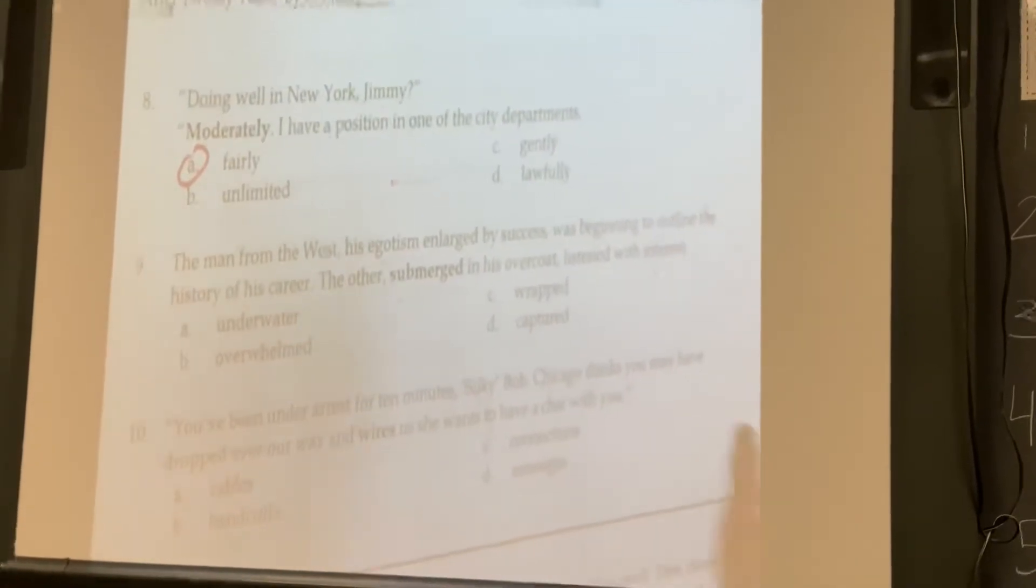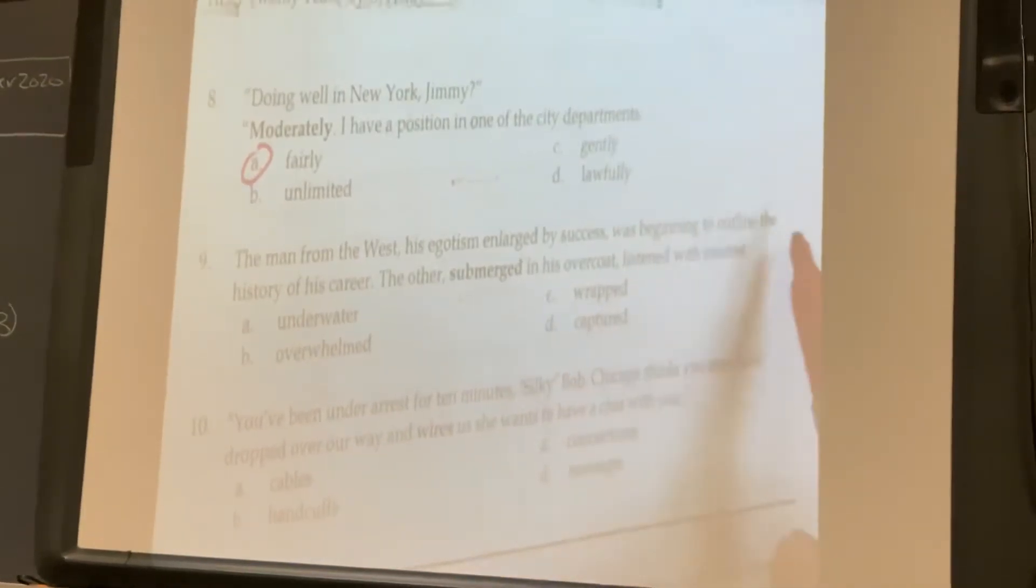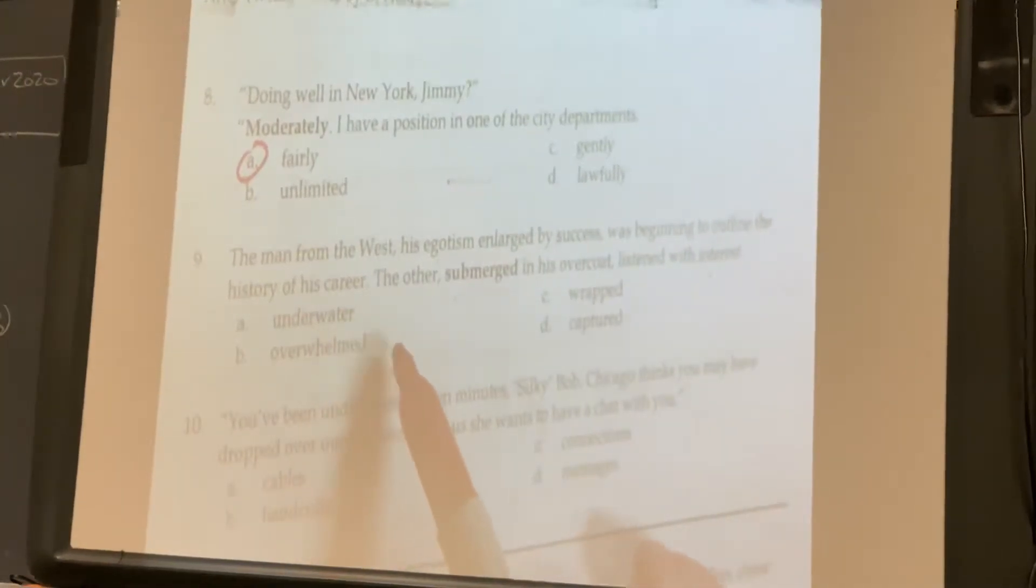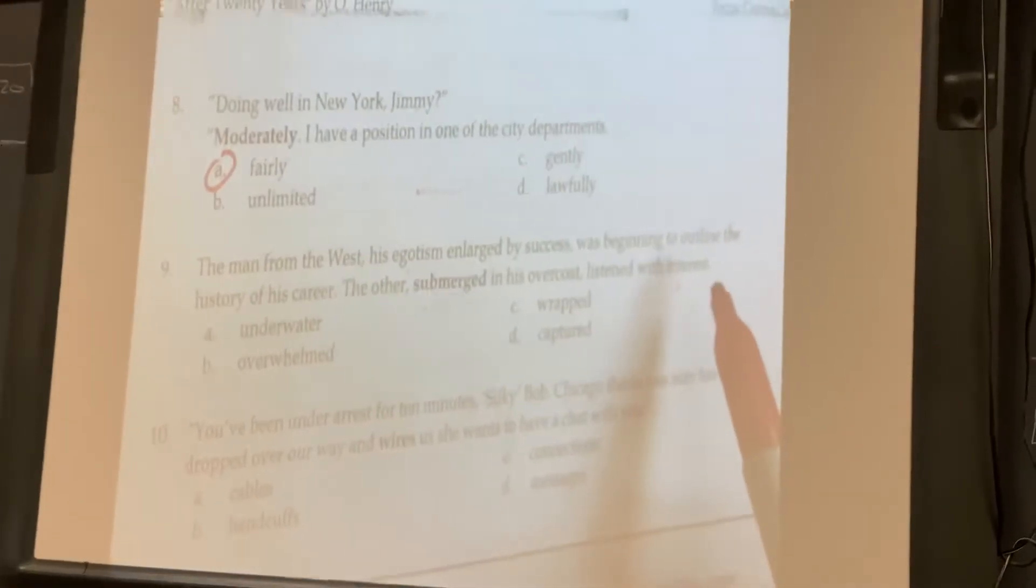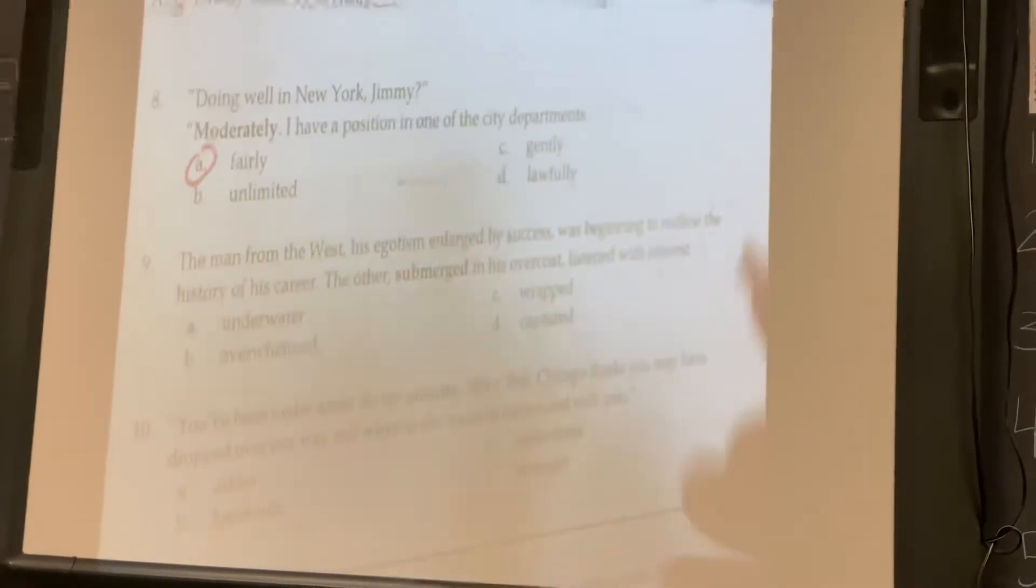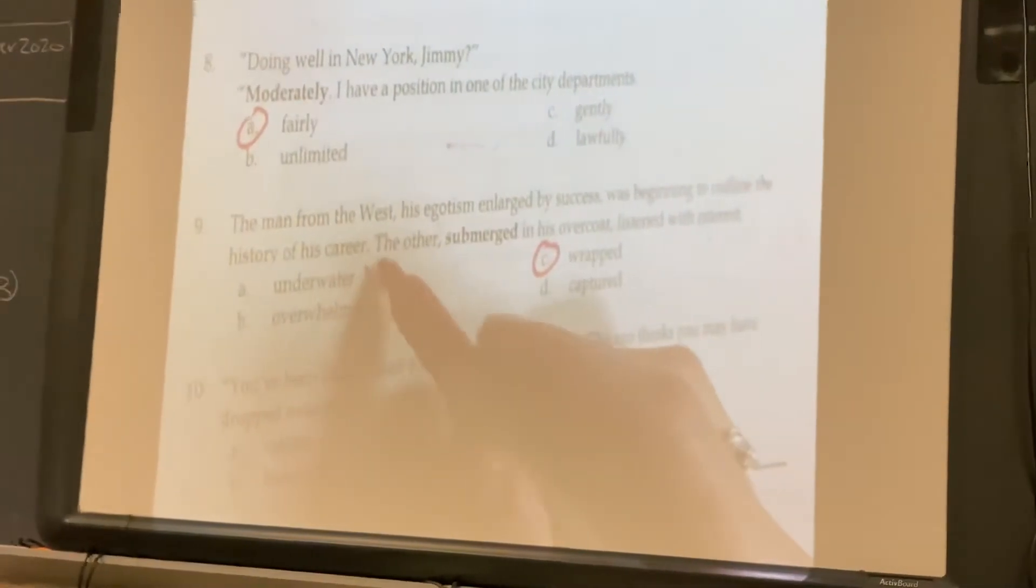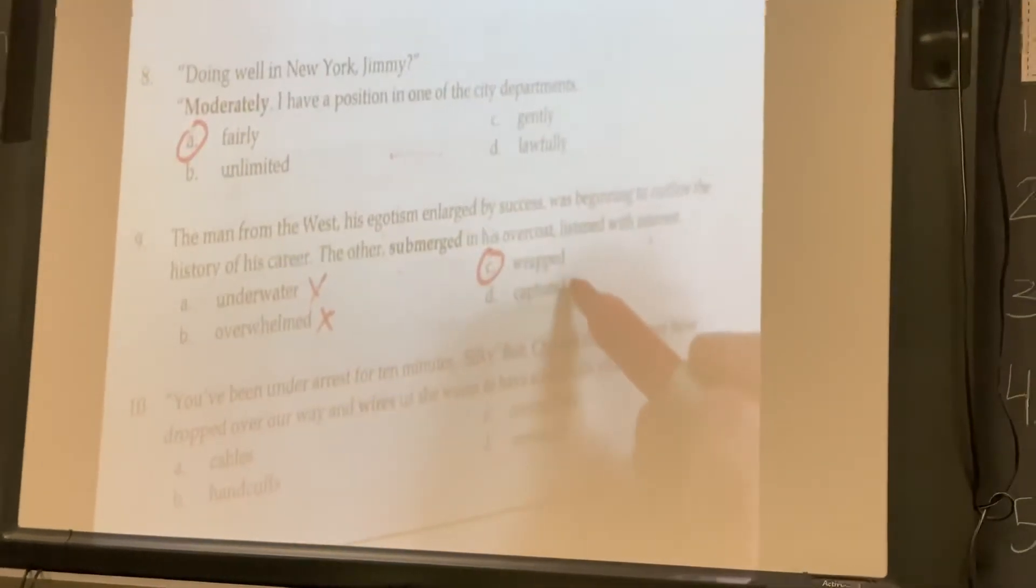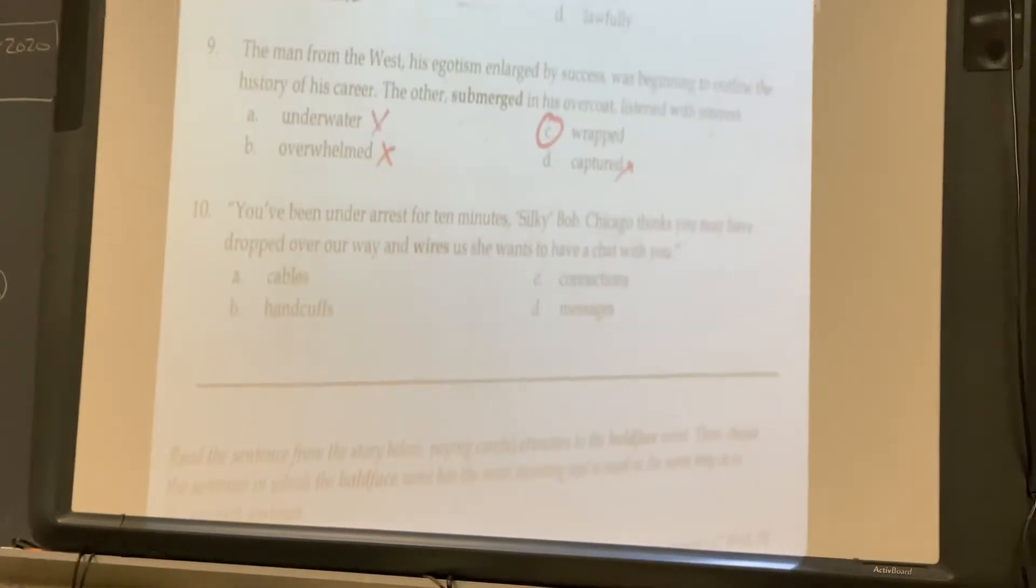Nine: The man from the West, his egotism enlarged by success, was beginning to outline the history of his career. The other, submerged in his overcoat, listened with interest. Here, submerged means wrapped. He's not underwater. He's not overwhelmed. He's not captured. He's wrapped in his coat. He's kind of sunken down because it's so cold.